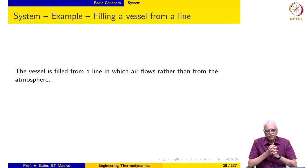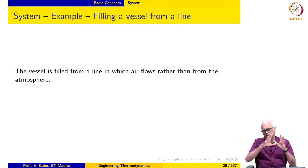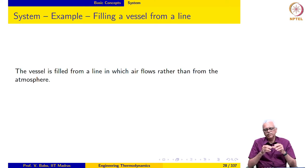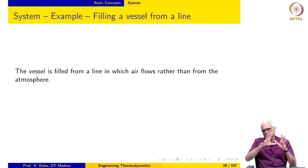The next example: we have a workshop line in which air is flowing at some pressure and temperature. We have a vessel and we connect the line to the vessel through a valve. We open the valve and fill the vessel with air, a certain amount of air, then we close the valve.